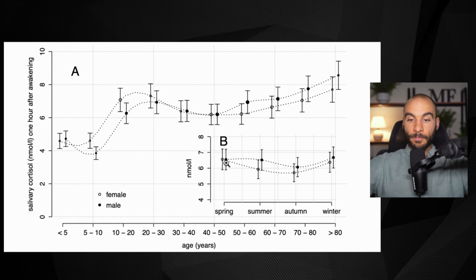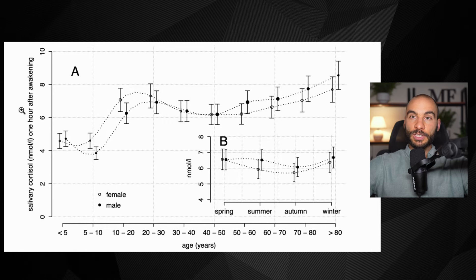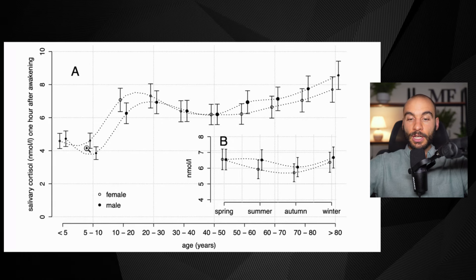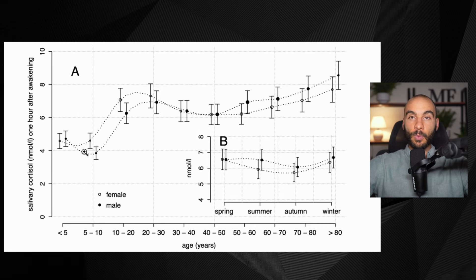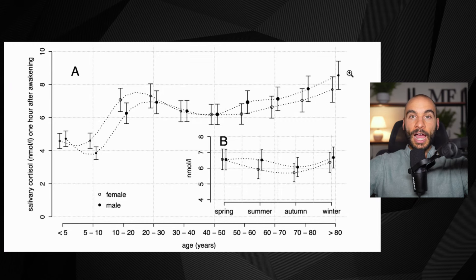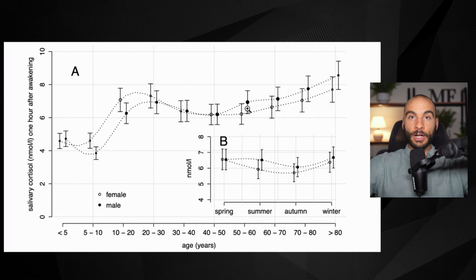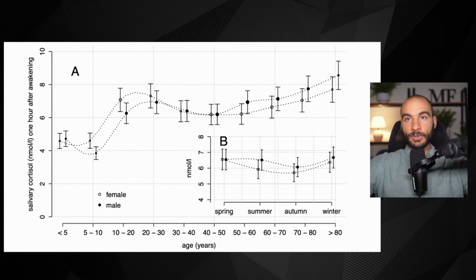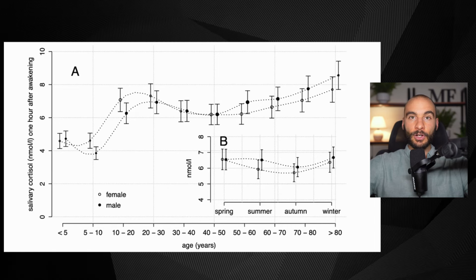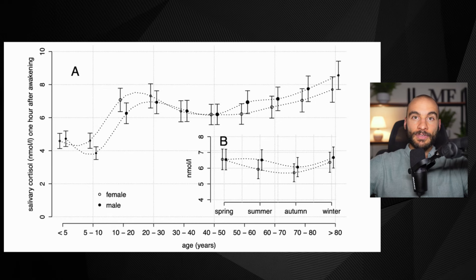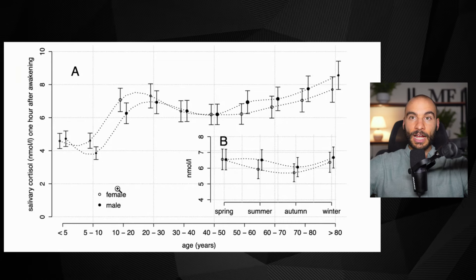Looking at another graph with age on the X-axis and salivary cortisol levels on the Y-axis — measured one hour after waking, near their peak — we see two lines: black dots for males and open dots for females. Over the lifespan, cortisol values actually increase with age. So as we get older, we're put into a circumstance of unopposed cortisol — essentially a chronic stress state where cortisol is degrading muscle tissue, increasing body fat around the abdomen, degrading bone mass, having negative effects on the brain, impairing immune function, and damaging mitochondrial function without the buffering effect of DHEA.